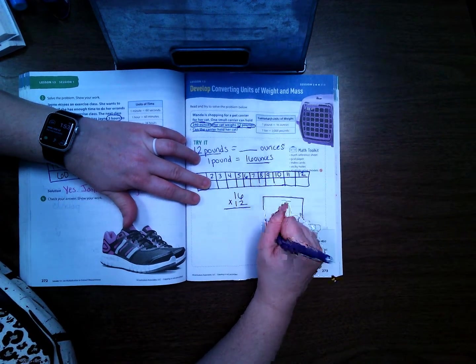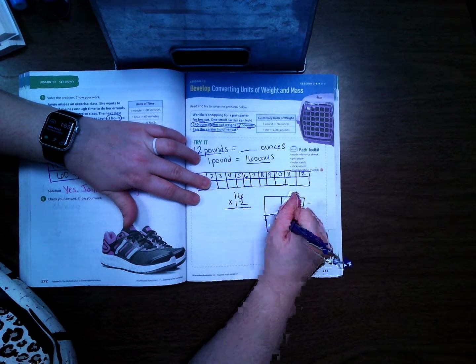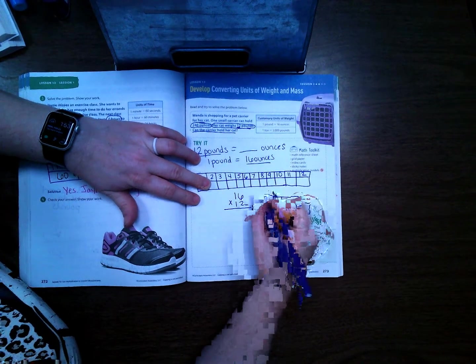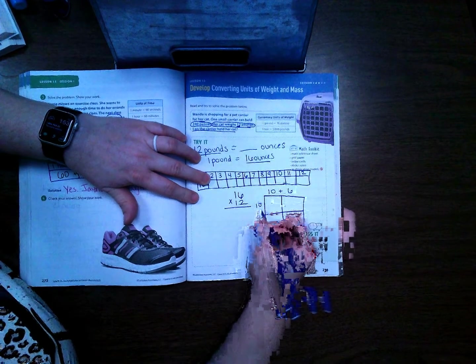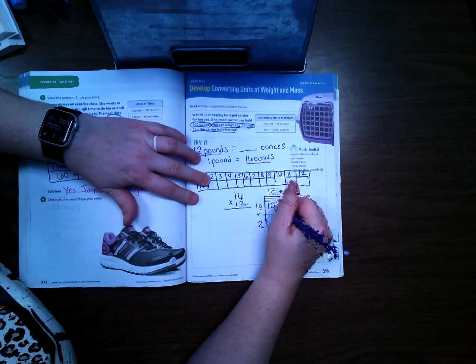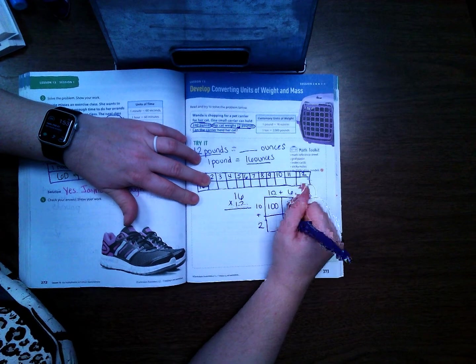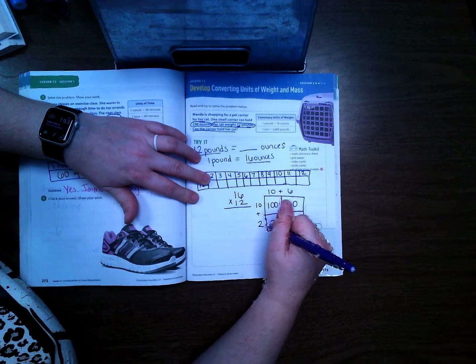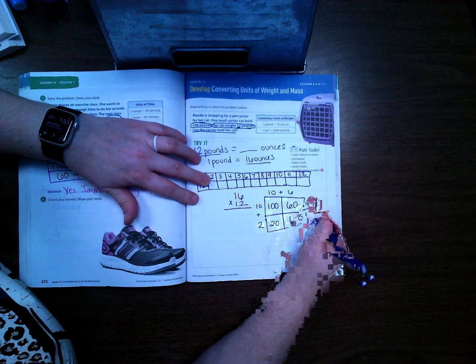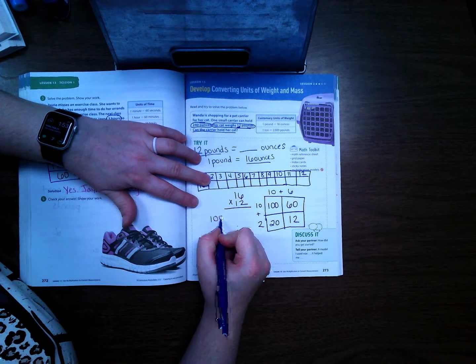I'm going to make a multiplication chart here and put these in expanded form. 10 times 10 is 100, 10 times 6 is 60, 10 times 2 is 20, and 2 times 6 is 12. So I'm going to add those together.